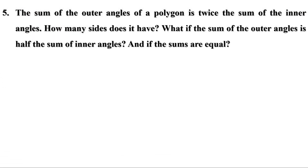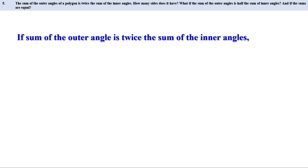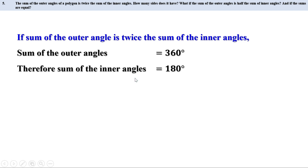Fifth problem: the sum of the outer angles of a polygon is twice the sum of the inner angles. How many sides does it have? The sum of outer angles is always 360 degrees. If this is twice the sum of the inner angles, then the sum of the inner angles is 180 degrees. A polygon with inner angle sum of 180 degrees is a triangle, so the number of sides is 3.